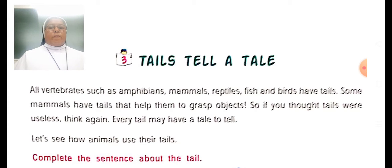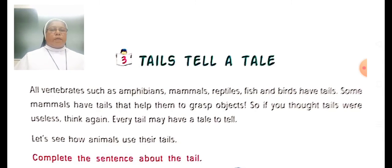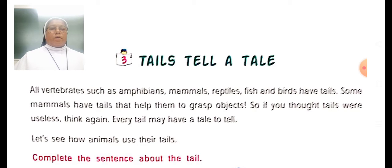All vertebrates such as amphibians, mammals, reptiles, fish, and birds have tails. Amphibians — for example, frogs. Mammals include cow, dog, cat, buffalo, etc. Reptiles include crocodiles, tortoise, snakes, etc. These are all examples of their respective groups.